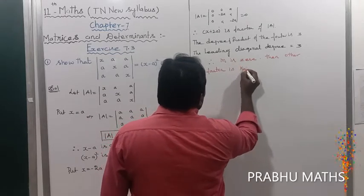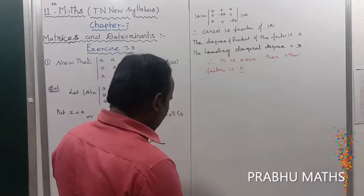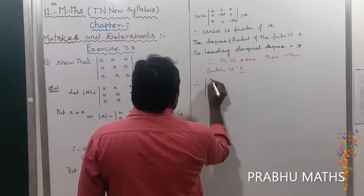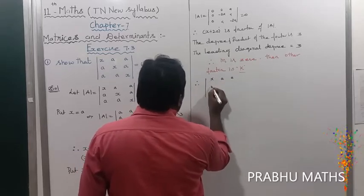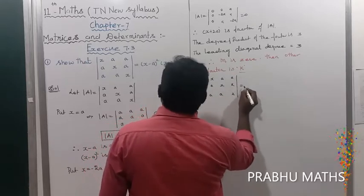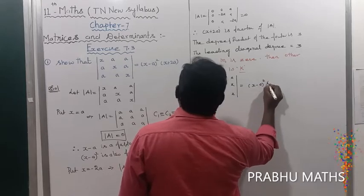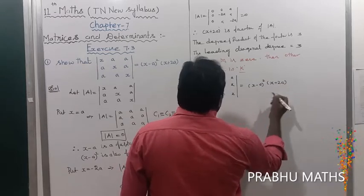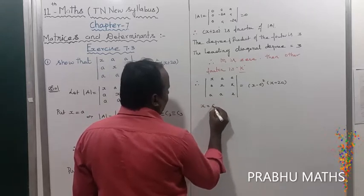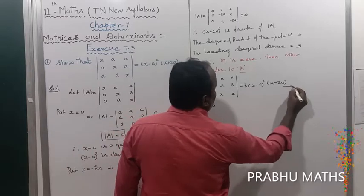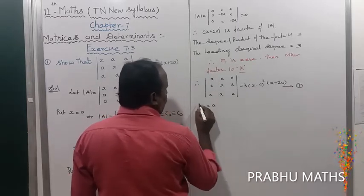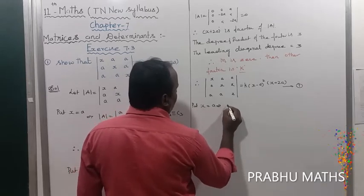The other factor is k only. Therefore, the determinant of x a a / a x a / a a x equals k times (x minus a) whole square times (x plus 2a). Now replace x by a value to find k.